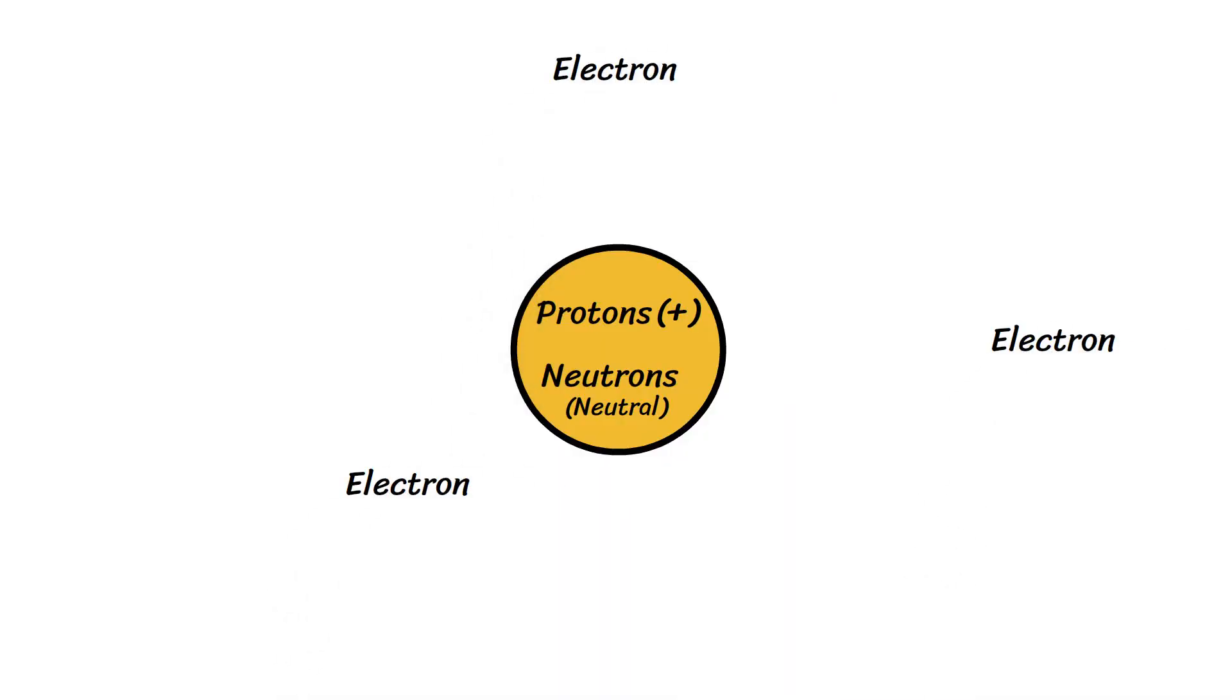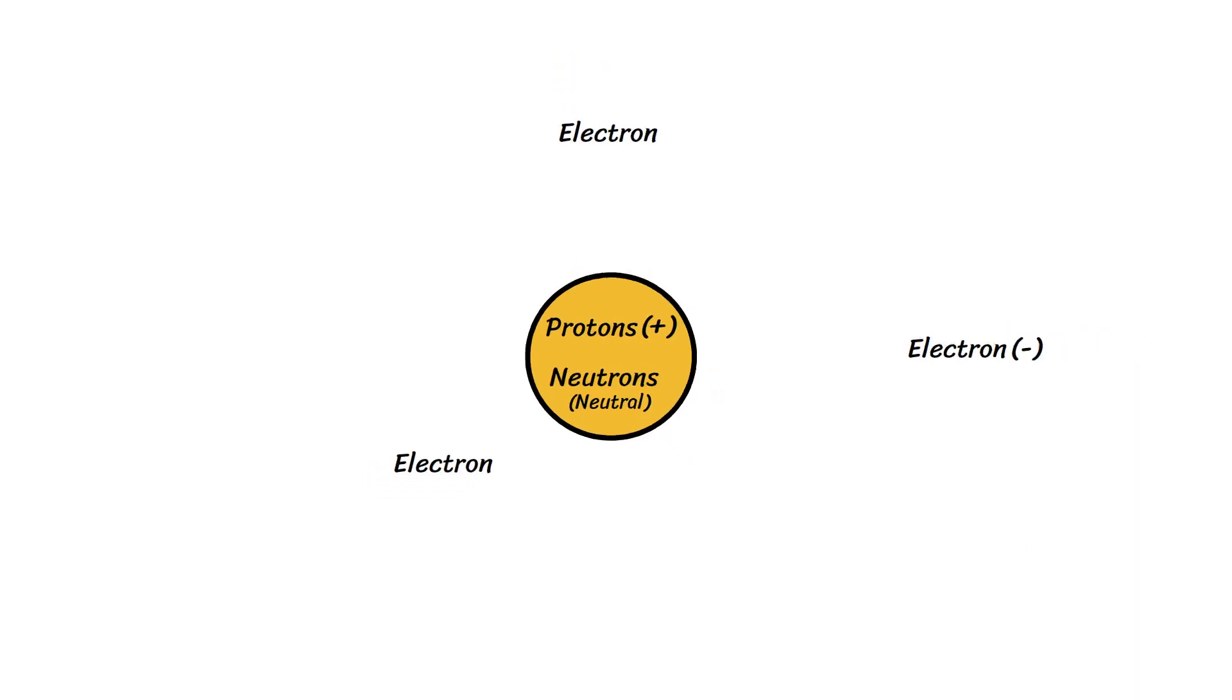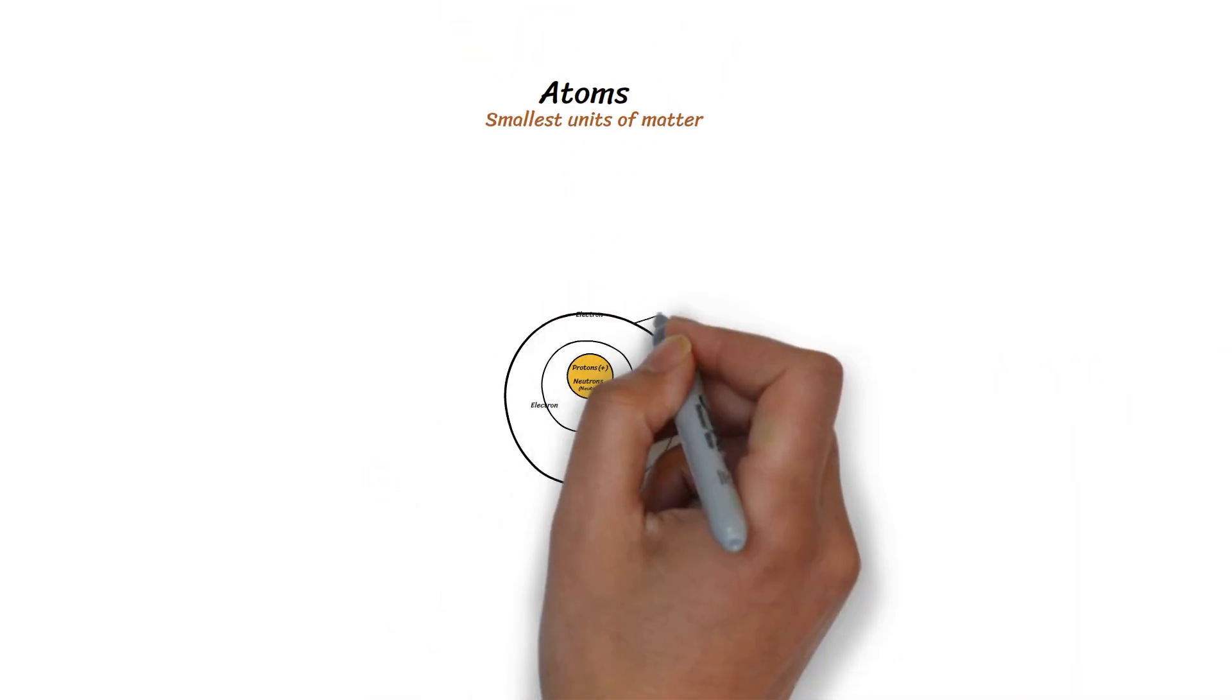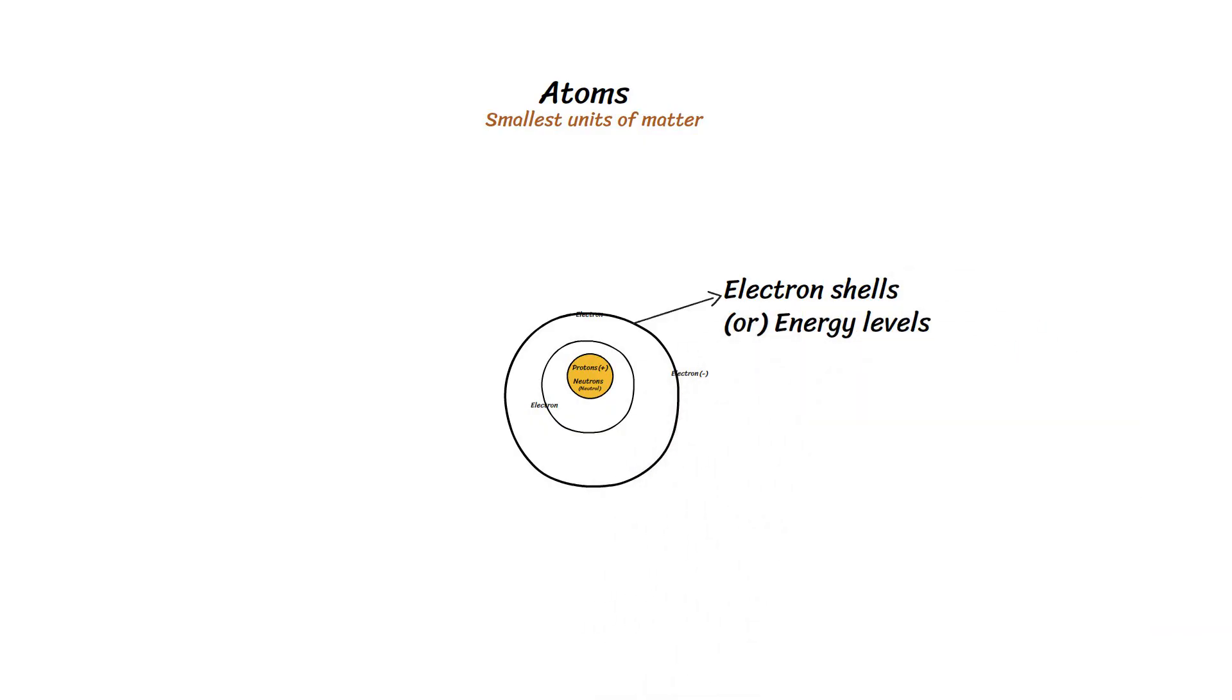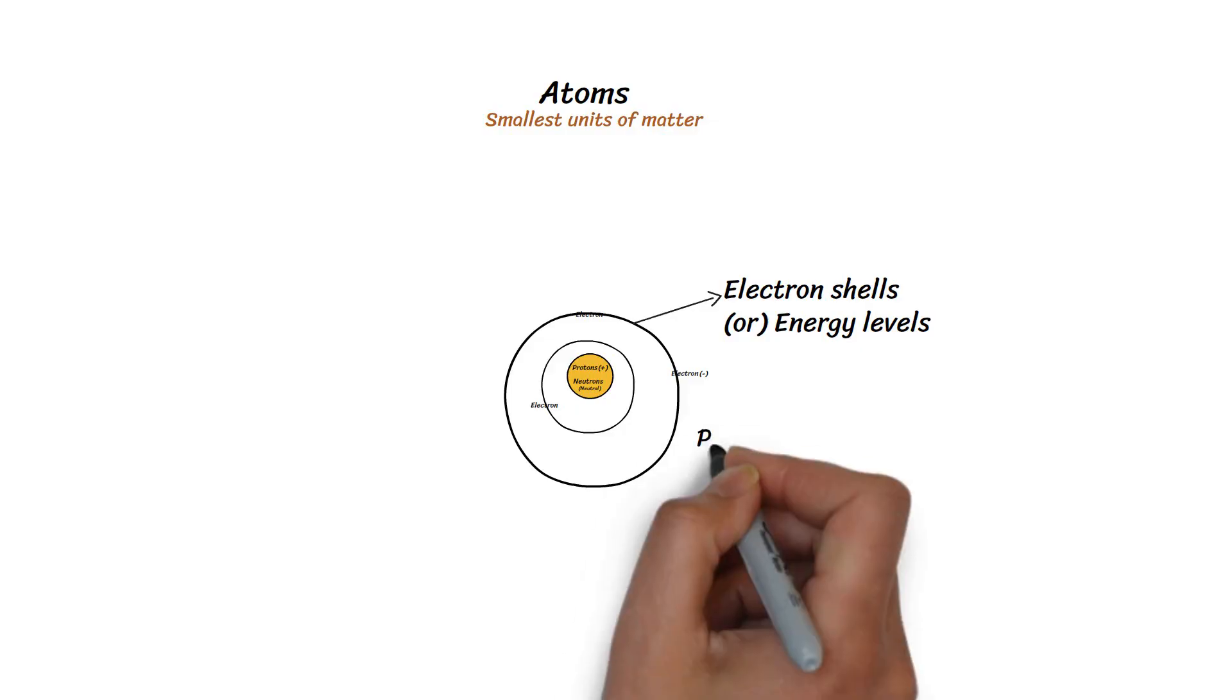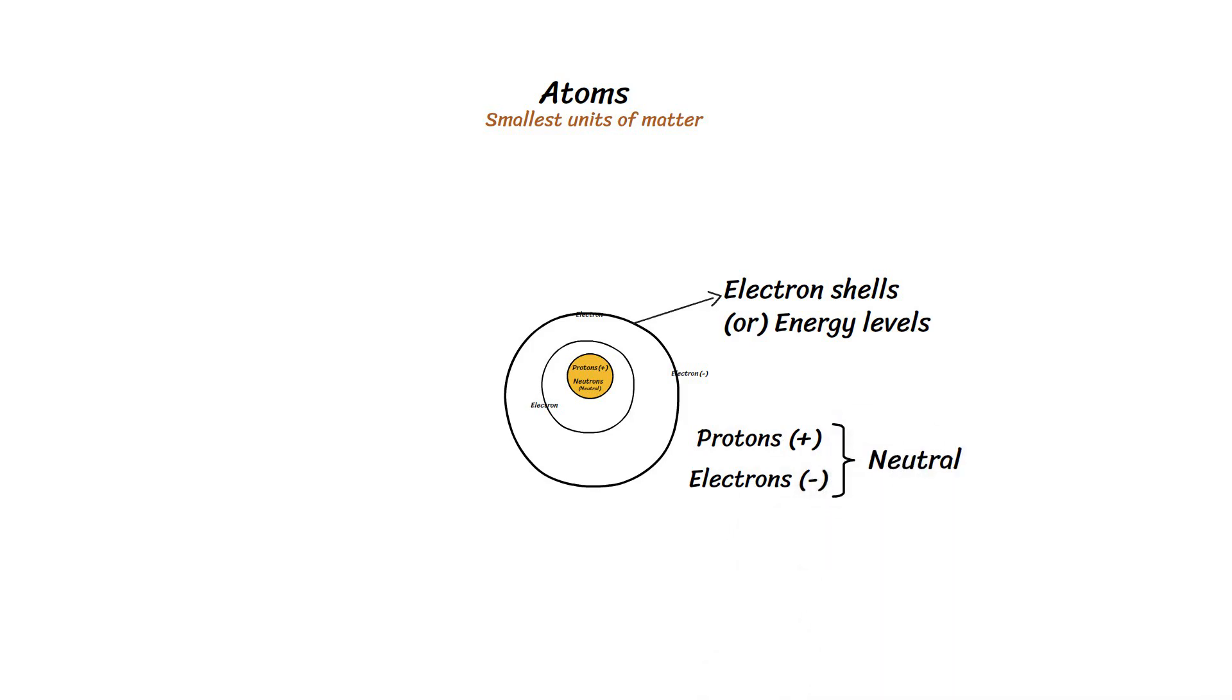Surrounding the nucleus, there are electrons, which are negatively charged particles. Electrons move within regions called electron shells, or energy levels, which are arranged at varying distances from the nucleus. The number of positively charged protons and negatively charged electrons keeps the atom electrically neutral. Together, this structure forms the basis of all matter. The arrangement of these particles influences the atom's chemical behavior and interactions.